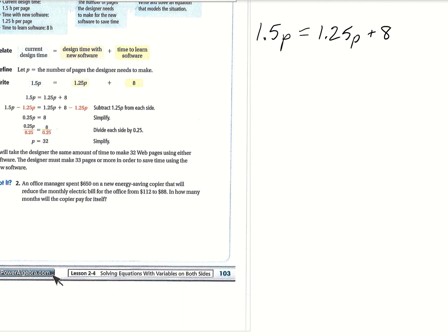So the way they did it, we can also do it this way. They subtract 1.25p from both sides. And then you're left with 0.25p equals 8. And then we're going to want to get p by itself. So we are going to divide by 0.25 or you can just multiply by 4 since 0.25 is one fourth. So we multiply both sides by 4.